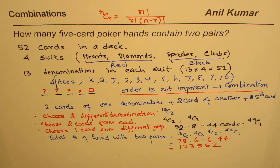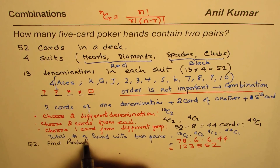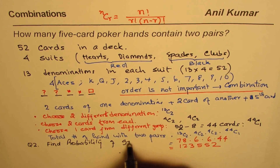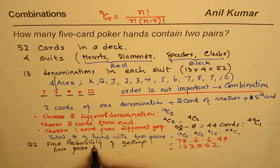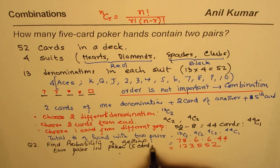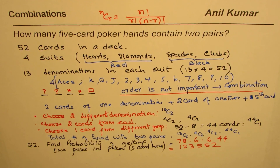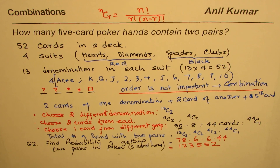As an extension, you can find the probability of getting two pairs in a five card poker hand. The total number of ways to choose five cards from 52 will be the denominator, and 123,552 is the numerator. I'm Anil Kumar — I hope this helps you understand how to answer such questions. Thank you and all the best.